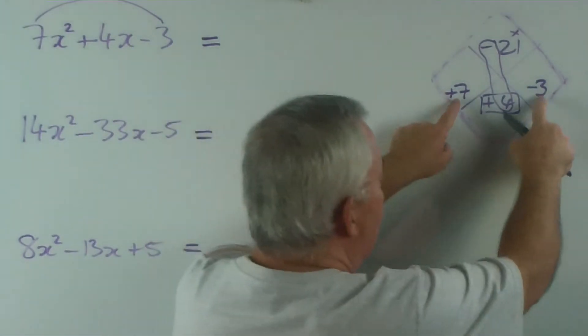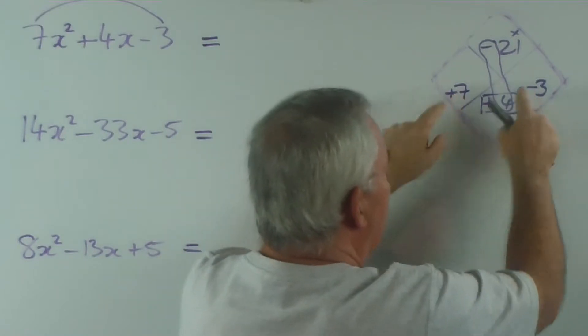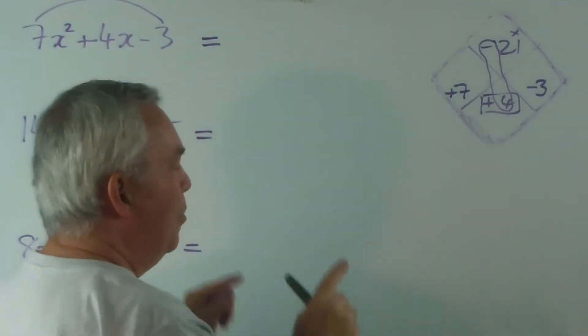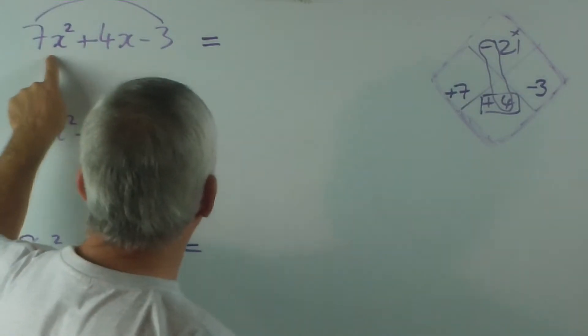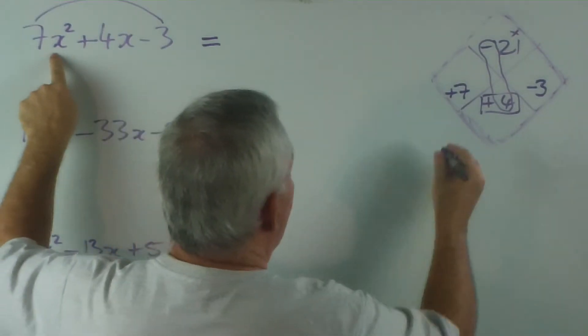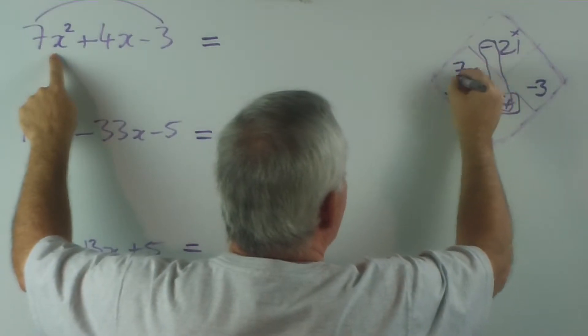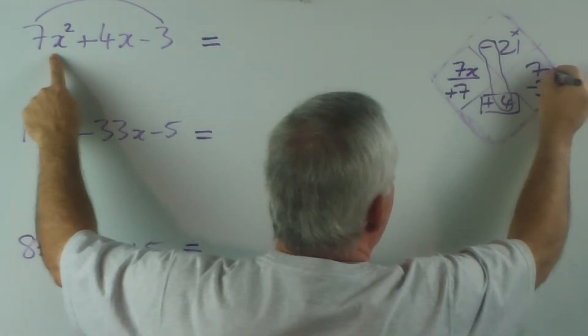Now, in my previous ones, I was writing these numbers below, but it's okay to have them here. What is different about this method is we take this first coefficient, or this first term, and we write - not 7x squared but 7x over each of these.